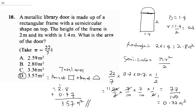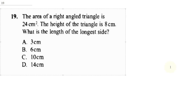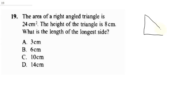Question 19 says: the area of a right-angled triangle is 24 cm squared. The height of the triangle is 8 cm. What is the length of the longer side? All we need to do is draw this triangle. It's a right-angled triangle. The area is 24 cm squared, the height is 8, and we are looking for x.